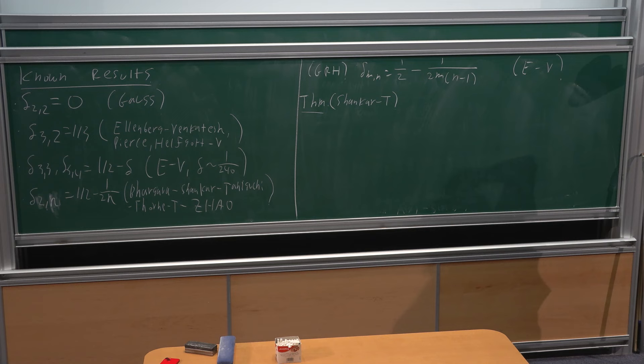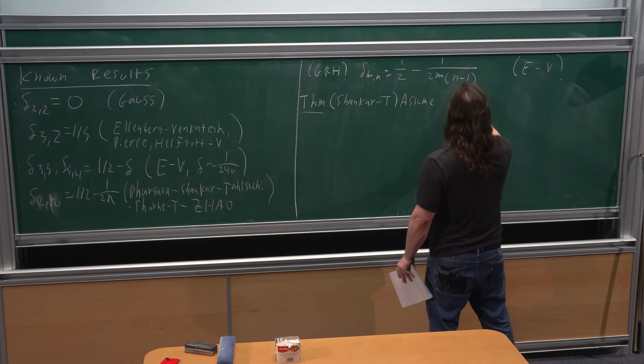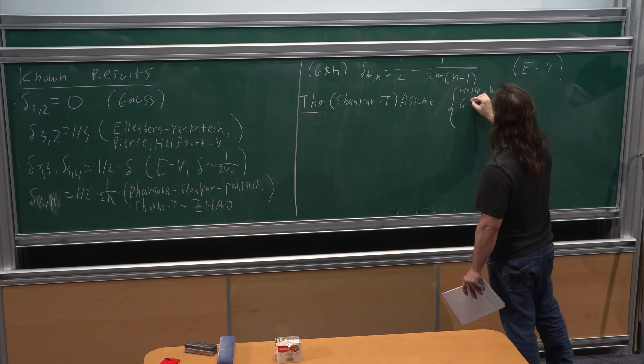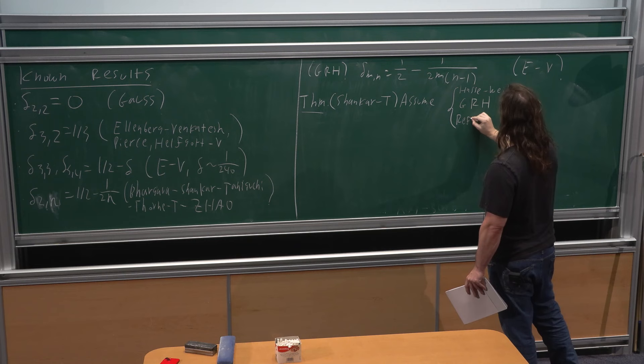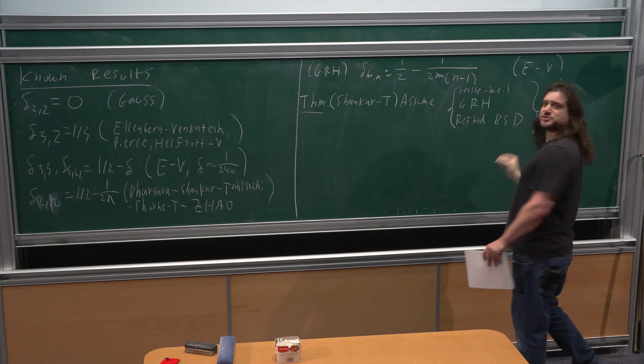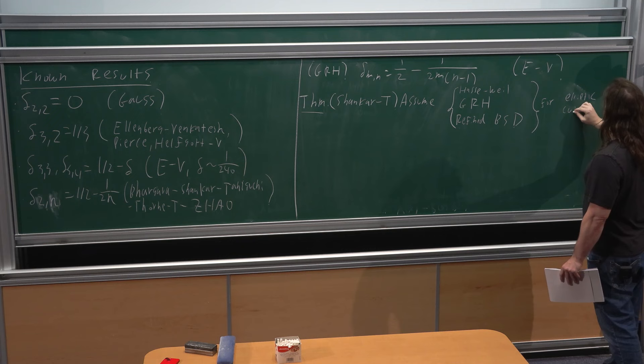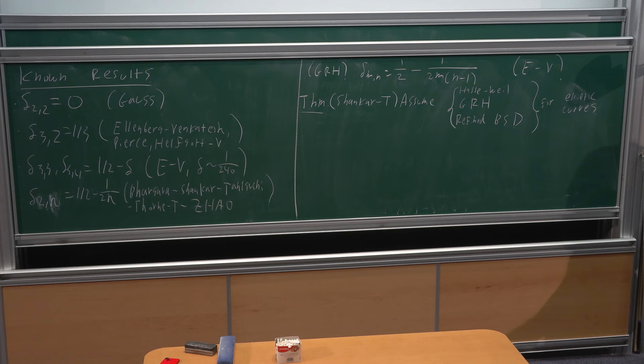This is joint work with Arul, and it's quite conditional—not as conditional as I'll make it seem, but for brevity let's assume a host of L-function conjectures. Let's assume the Hasse-Weil conjectures, let's assume Riemann, and let's also assume the BSD conjecture—not just the order of vanishing, but the actual refined BSD formula as well. For elliptic curves, over Q we have modularity, but we want this over number fields for the full result.